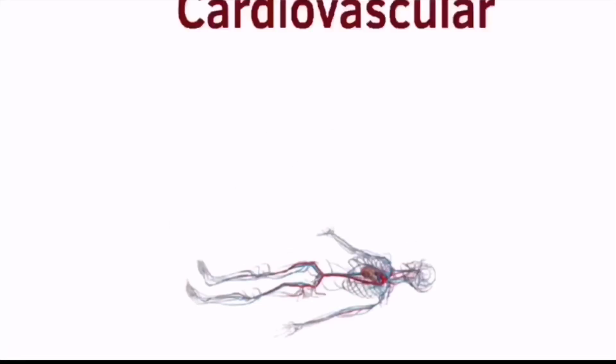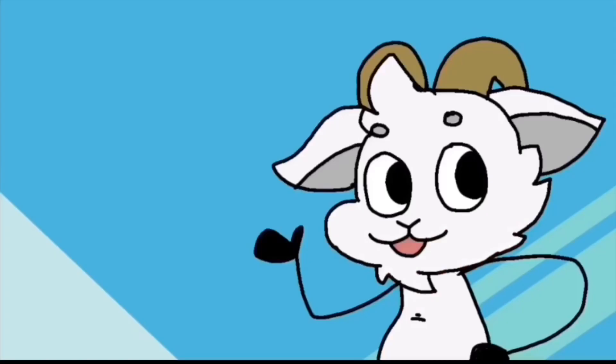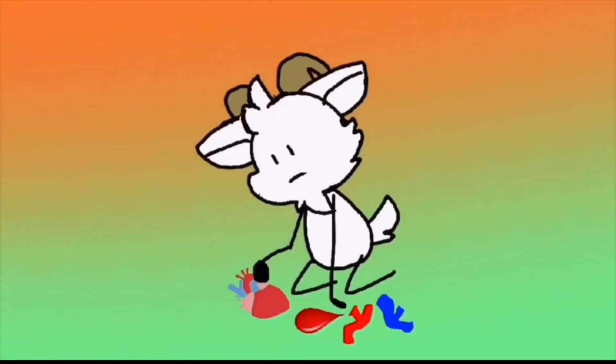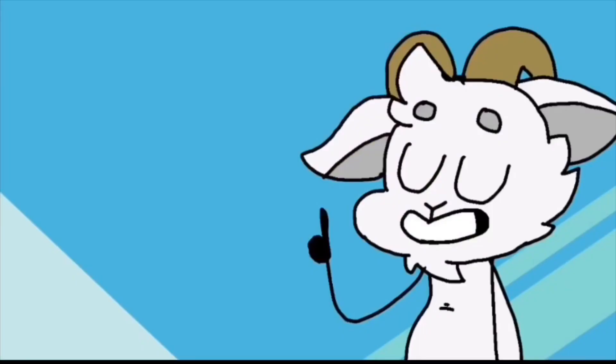This is the cardiovascular system. This system is all about circulating blood throughout the entire body. We're going to divide each part of the cardiovascular system and talk about them one by one, starting with blood.